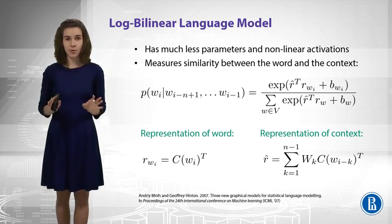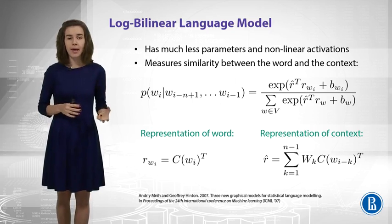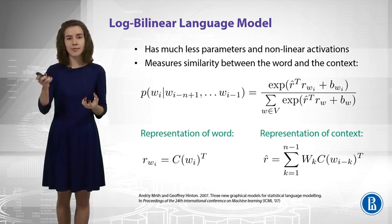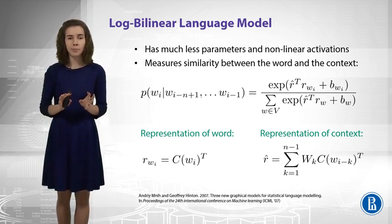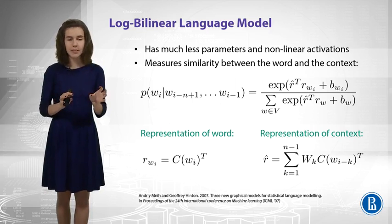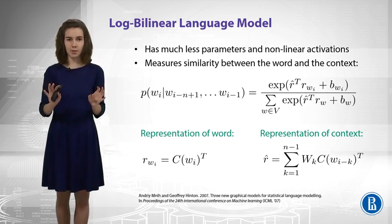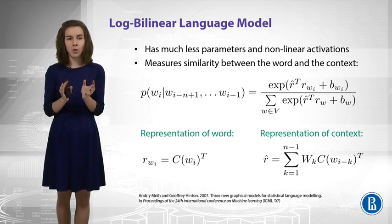You still have some softmax, so you still produce some probabilities, but you have some other values to normalize. So, you have some bias term B, which is not important now. The important part is the multiplication of word representation and context representation.